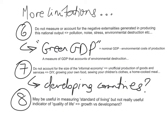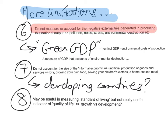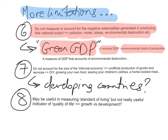There are more limitations. National income statistics do not measure or account for the negative externalities generated in producing national output. If the economy is achieving growth and there is an increase in national output, but this comes at the expense of pollution, noise, increased stress levels, and environmental destruction, that's not reflected in national income statistics. This is why the concept of green GDP is becoming very common — it is nominal GDP minus the environmental costs of production, a measure of GDP that accounts for environmental destruction and takes into consideration the effect on the environment.